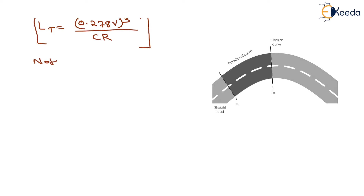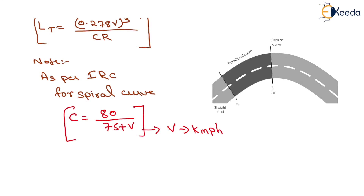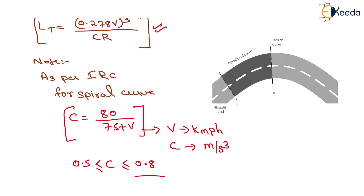As per the Indian Road Congress for spiral curves, the value of C is given by C = 80 / (75 + v), where v is in km/h and C is in m/s³. Generally the value of C ranges between 0.5 to 0.8. This completes the length of transition curve as per the first criterion.